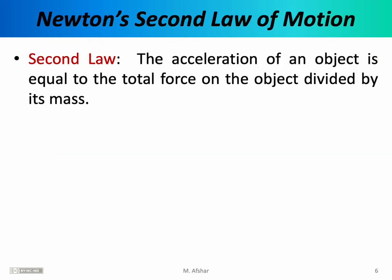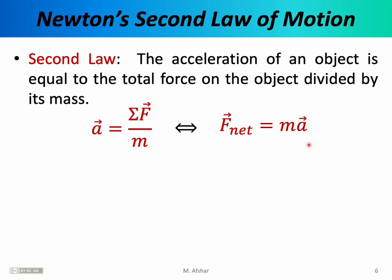Now we can turn to Newton's second law of motion, which states that the acceleration of an object is equal to the total force on the object divided by its mass. We can express this as: acceleration equals net force divided by mass. The symbol sigma denotes summation — if there are multiple forces, we need to sum them together to find the total force and then divide by mass to find the acceleration. It is the total force or summation of forces that appears in this equation, not just a single force.